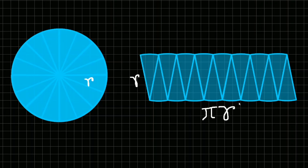Now let's have a look at this diagram. Here I divide the circle into 16 equally different portions and then reorganize them to get this new object. Again, this side of the object is equal to pi r and this side is equal to r. Now do you think it's a rectangle? You have to admit that this looks closer to a rectangle than the previous two objects. I think those of you who are comparatively clever have already understood what I'm trying to do.